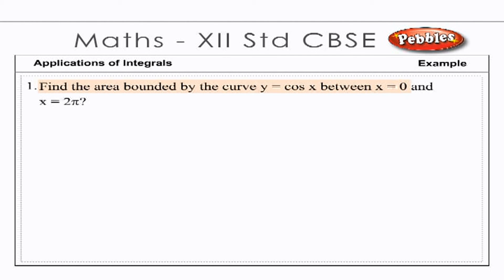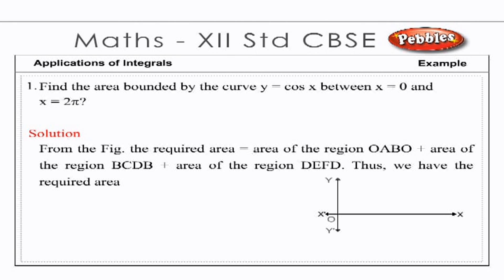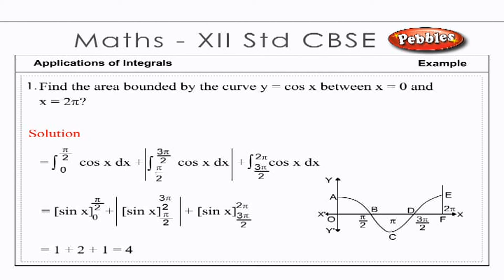Find the area bounded by the curve y = cos x between x = 0 and x = 2π. Solution: From the figure, the required area equals the area of region OABO plus the area of region BCDB plus the area of region DEFD. Thus, the required area equals ∫₀^(π/2) cos x dx + |∫_(π/2)^(3π/2) cos x dx| + ∫_(3π/2)^(2π) cos x dx. On simplification, the required area equals 4.